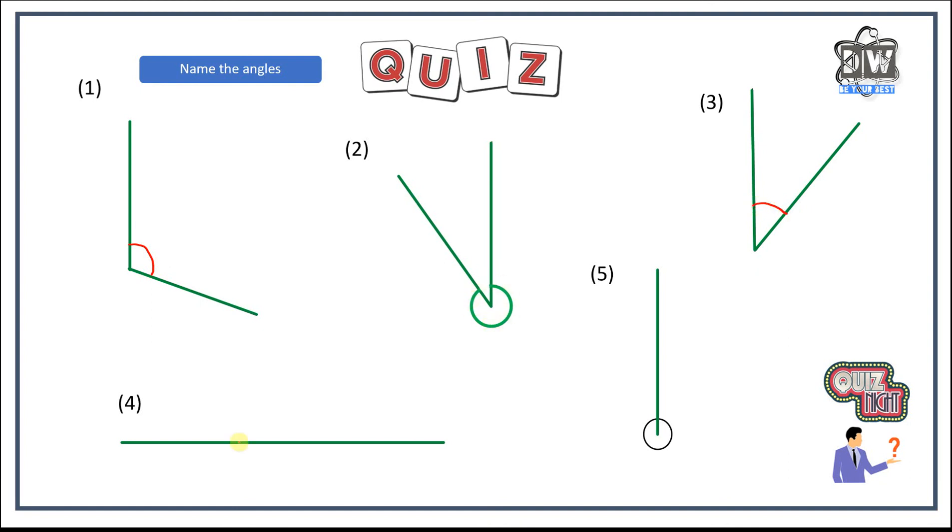We can see this is the slightly bigger one. This angle here, the straight line. Ah, I told you one. I told you four was straight line. There you go. You got only four to do now. I'm sure you knew that one anyway, but pause the video, give them a go, come back and see if you've got them right.